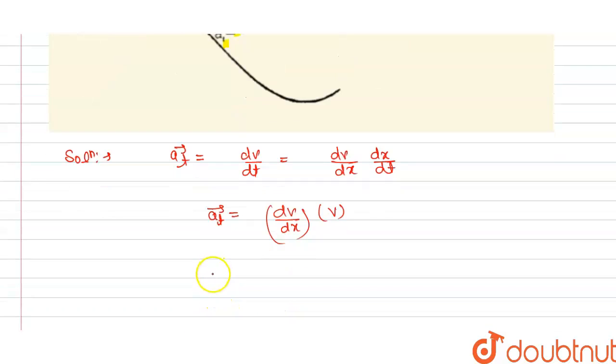We can write here acceleration a·dx = v·dv. This is equation 1.